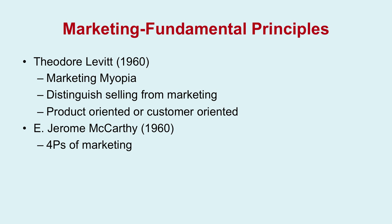Theodore Levitt in 1960 talked about marketing myopia, an extremely important article — I urge each one of you to read it. He makes a complete distinction between selling and marketing. Selling means providing a service to a user or customer against a price — there is commerce taking place — whereas marketing is about bringing awareness, creating a brand, increasing outreach. Levitt discussed product orientation versus customer orientation. Jerome McCarthy in 1960 also talked about the four Ps of marketing, which is a very important aspect.